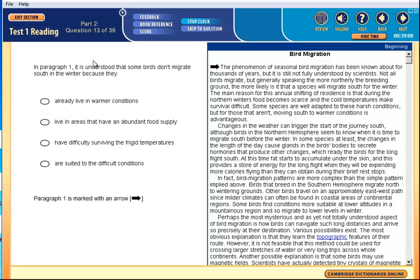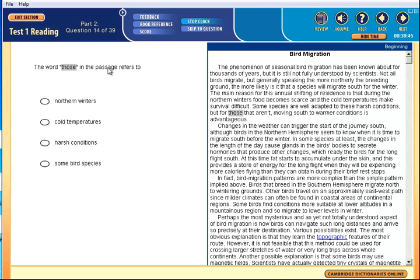In paragraph one, it's understood that some birds don't migrate because they... I think I read that, didn't I? Some species are well adapted to harsh conditions. So are adapted to conditions, suit the conditions. The word 'those' refers to some species well adapted, but for those that aren't, those species. Some species are, but some species that aren't. Species.